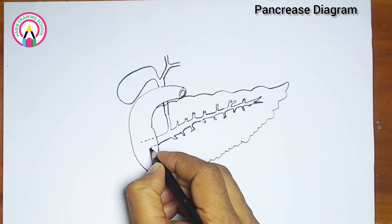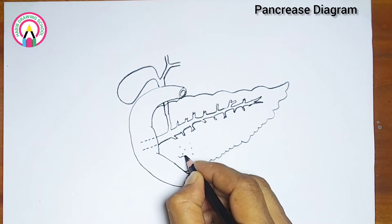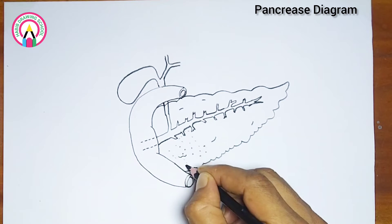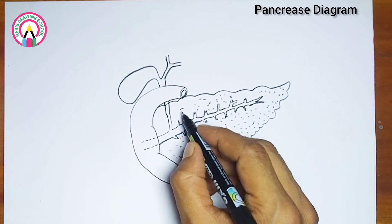Insulin lowers blood sugar levels by promoting the uptake of glucose into cells, while glucagon raises blood sugar levels by stimulating the liver to release stored glucose into the bloodstream.